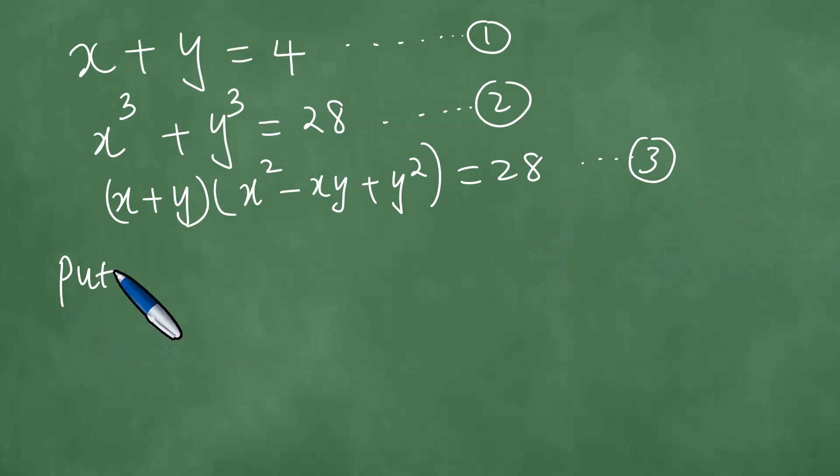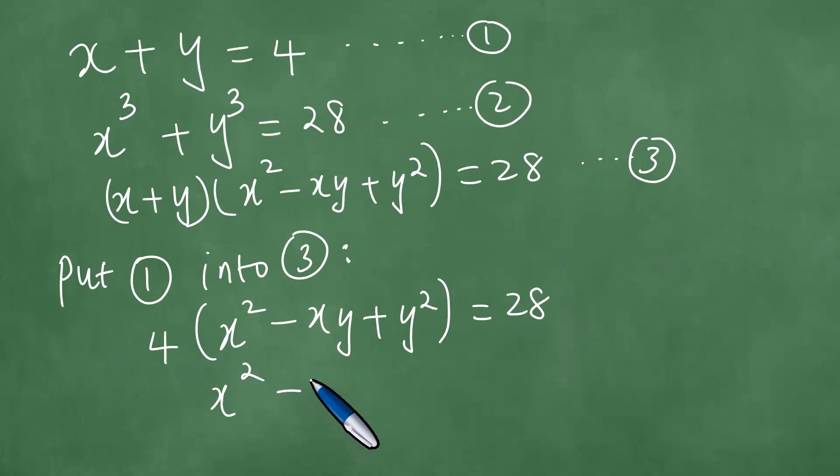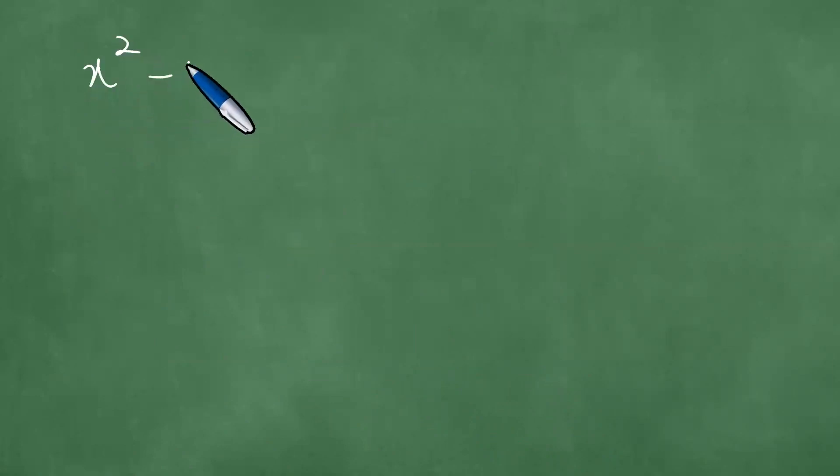You proceed to say put 1 into 3, which means you have 4 times x squared minus xy plus y squared equals 28. Dividing both left and right by 4 gives us x squared minus xy plus y squared equals 7. Therefore, x squared minus xy plus y squared equals 7. Now call this one equation 4.